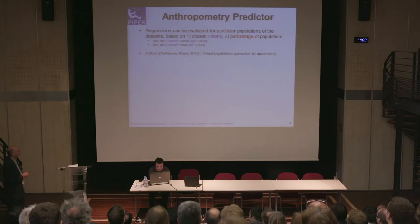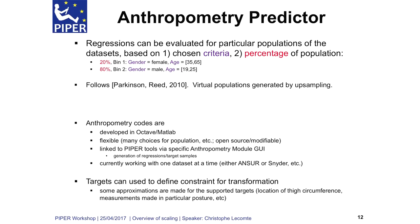This follows the work that has been presented and used at the University of Michigan previously, and we do a sampling of the population. The codes for anthropometry are developed in Octave and MATLAB, and are quite flexible. This is linked to Piper Tools via the anthropometry module user interface, and Mathieu is going to show a demonstration right now.